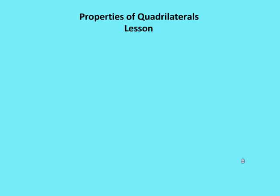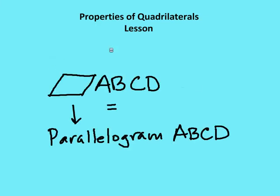Just as a matter of notation, when we talk about a parallelogram, the shorthand for parallelogram is going to be this figure here that looks like a rhombus. So this figure means parallelogram — for example, parallelogram ABCD. You can use it as shorthand when writing your reasons and statements and when looking at what the givens are.